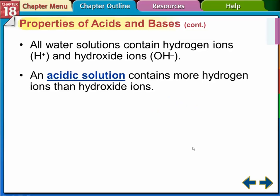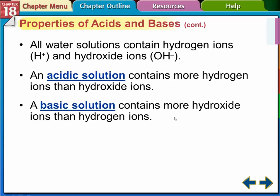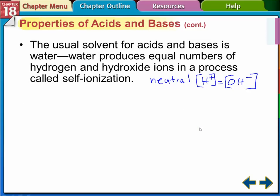All water solutions contain H-plus ions and hydroxide ions. Water is a polar molecule, and it actually pulls some of its own molecules apart into its different ions — not that many, but it does have H-plus and OH ions. When it's acidic, the concentration of hydrogen ions is greater than the concentration of hydroxide — more H-plus, less OH. Basic is the opposite: more hydroxide, more OH, and less H ions.